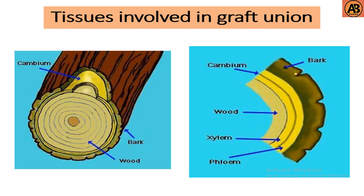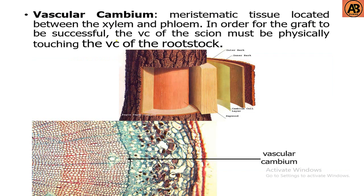The layers are: bark, then phloem, then cambium, then xylem, then wood. These are the tissues involved in the graft union — bark, phloem, cambium, xylem, and wood. Here you can see the vascular cambium, which is meristematic tissue.